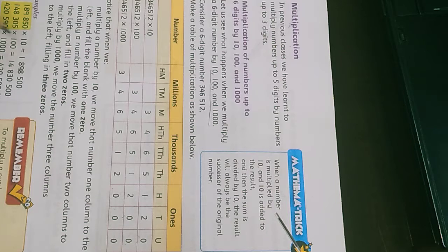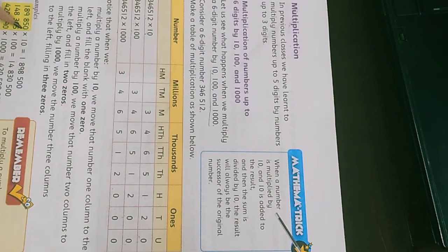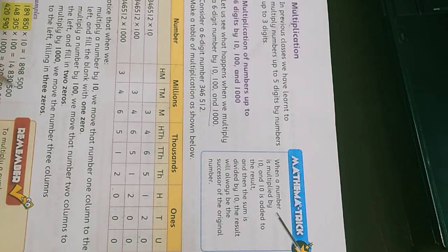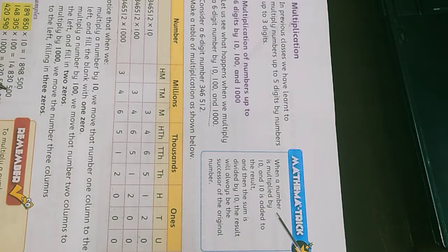We have also given you examples. When you have this value and you multiply by 10, you add one zero — we have added one zero here. Next, when you have this value and multiply by 100, you add two zeros.